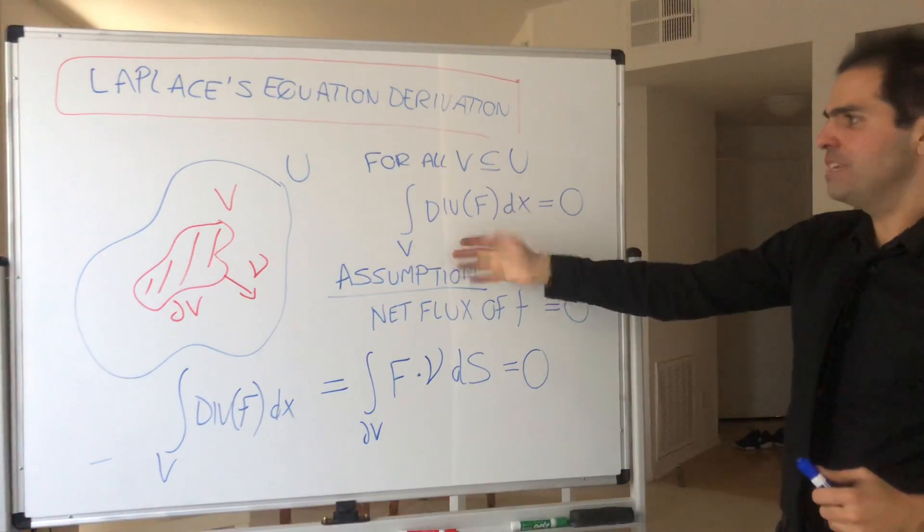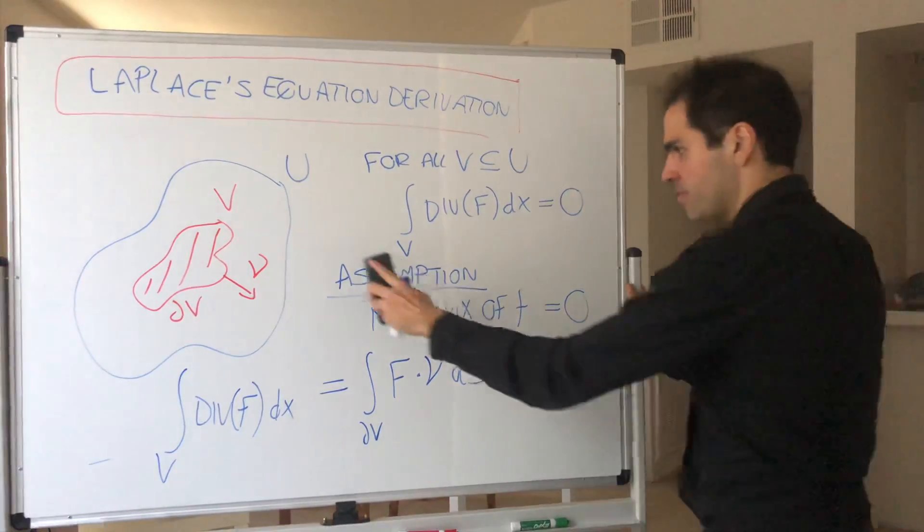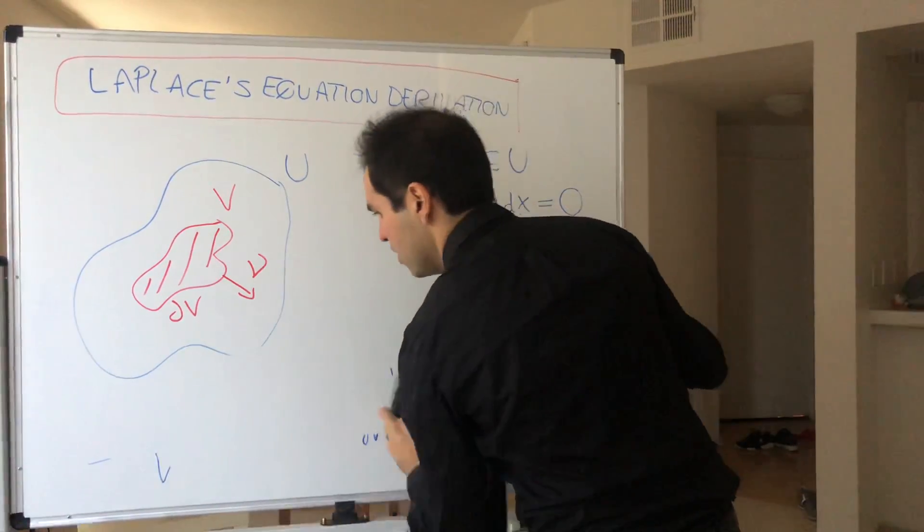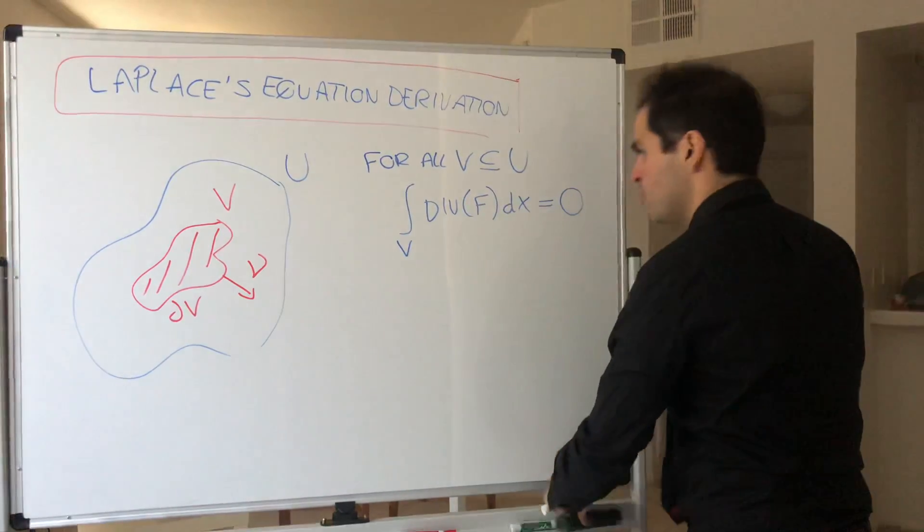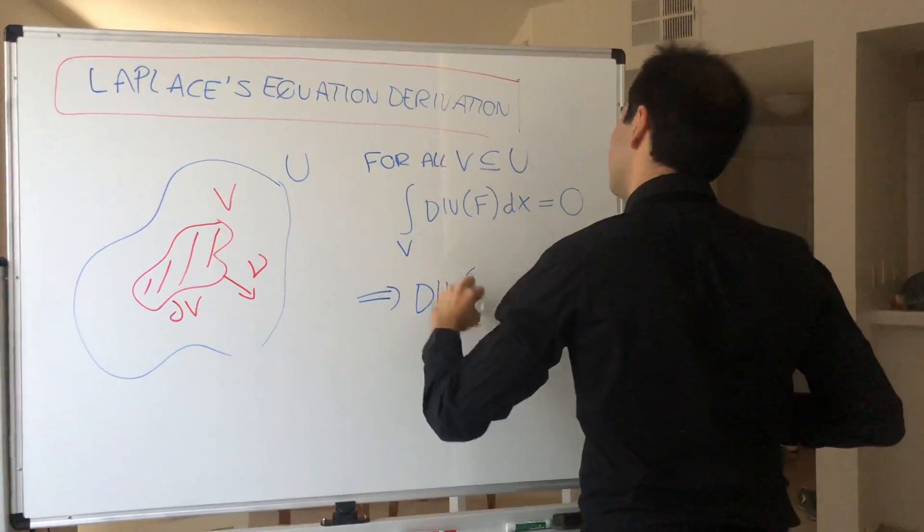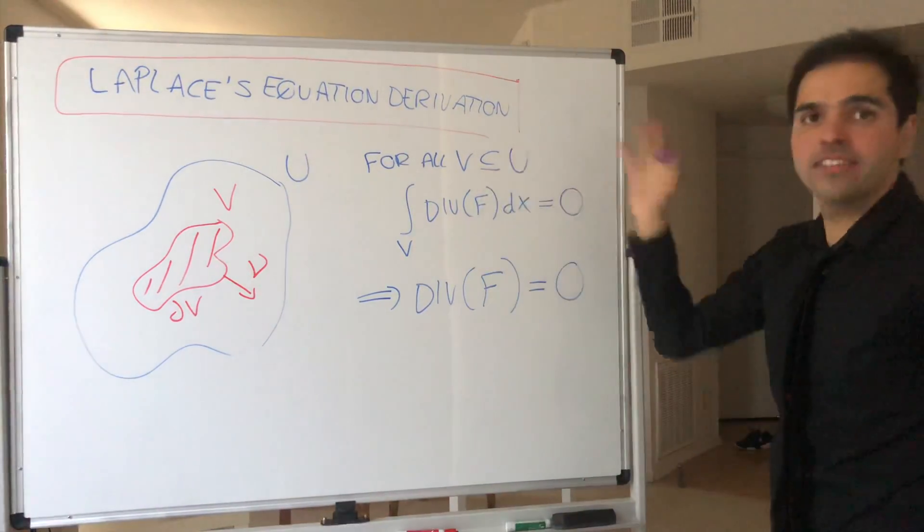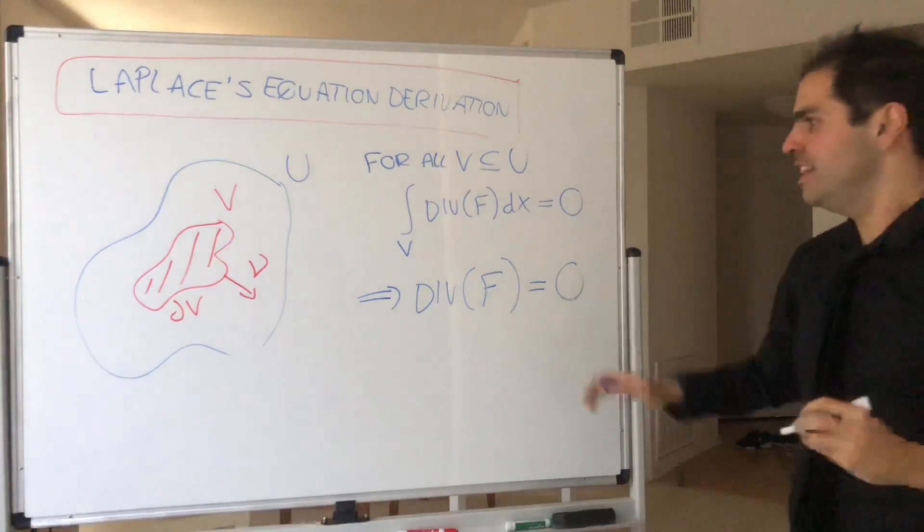and what this means is, well, the inside function has to be zero. So, divergence of F equals zero. Again, almost everywhere, but let's assume it's continuous. So, indeed, everywhere.